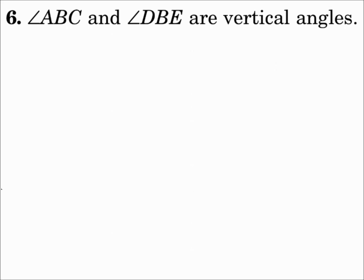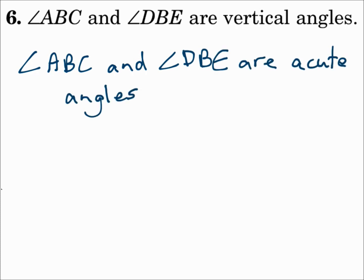Number 6: Angle ABC and angle DBE are vertical angles. Well, there's lots of things you can say about vertical angles. What I'm going to say is that angle ABC and angle DBE are acute angles. You might make the conjecture that they're congruent angles or that they're right angles. Just make sure that whatever your conjecture is, it's related to the pieces that they give you. Don't create a new piece and say angle 1 is obtuse because we don't have angle 1 in this situation. So don't add other irrelevant information to the story.